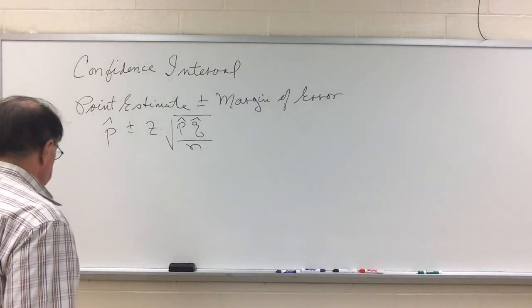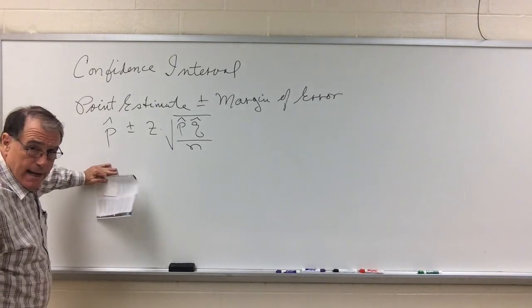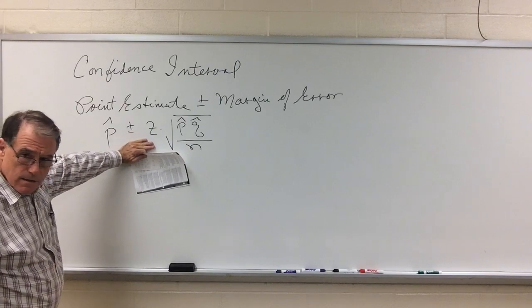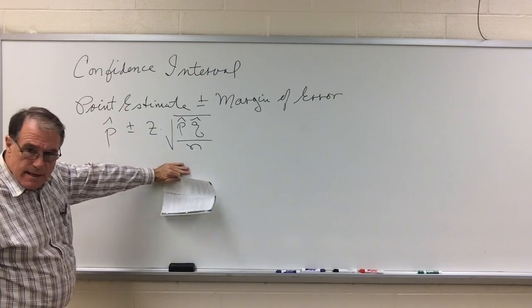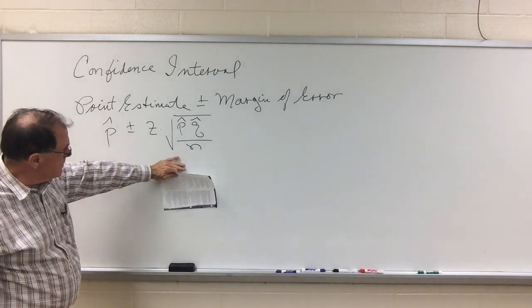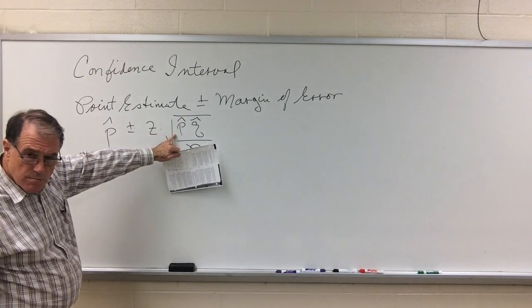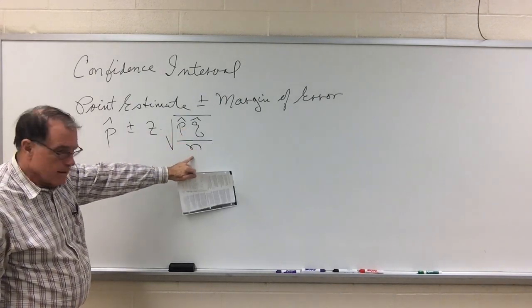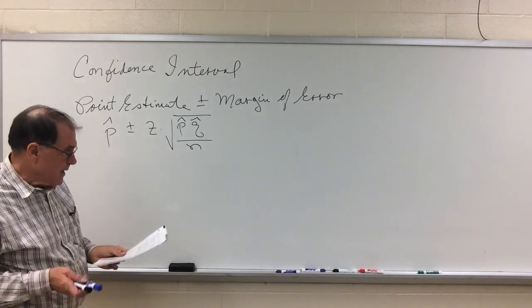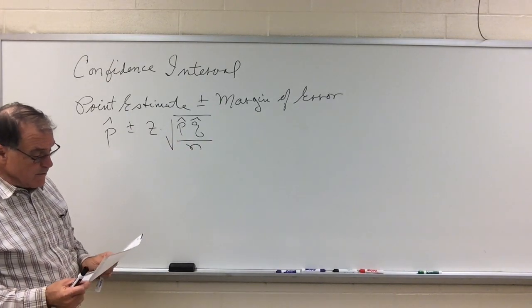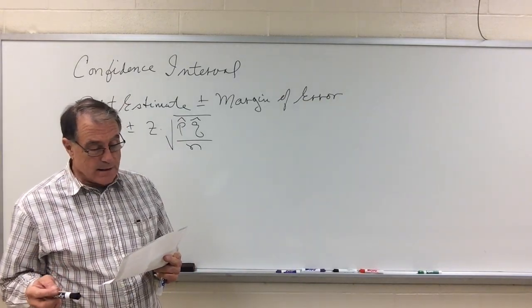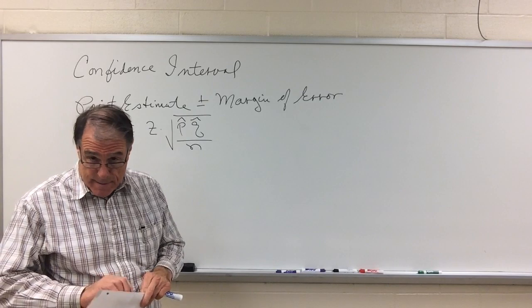For a proportion, we said it's the point estimate which would be the sample proportion plus or minus the z-score times the standard error which is the square root of the sample proportion p-hat times its complement q-hat divided by sample size. Here's an example. So let's say we take a survey and we ask adults if you would like to travel into outer space.